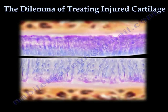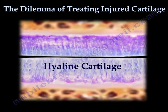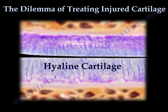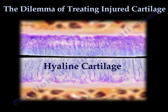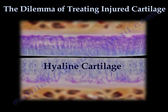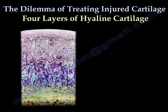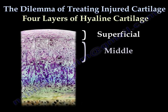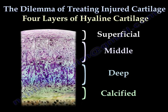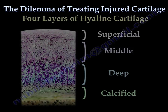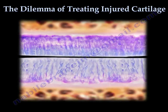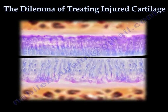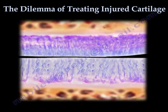Normal articular cartilage, also known as hyaline cartilage, provides a smooth, crystal clear gliding surface to aid in the motion of the joints. The structure of hyaline cartilage is divided into four layers: the superficial, middle, deep, and calcified layer, with the calcified layer representing a transition from articular cartilage to bone. This cartilage is designed to achieve and maintain proper function over the majority of a person's life.